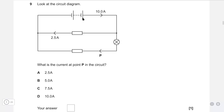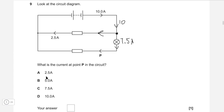We have a circuit diagram with 10 amps going one way and 2.5 amps going another way. This means the 10 amps split at a junction. Anytime you see a junction, the current can go either way. If 2.5 amps go one way, then we must have 7.5 amps remaining, because they add up to 10. So 7.5 amps is the answer — the correct answer is C.